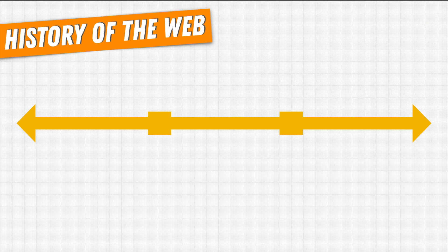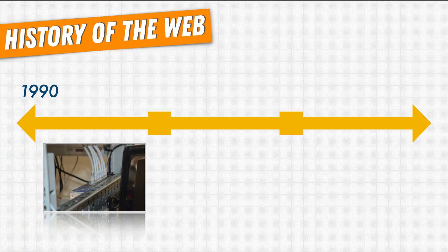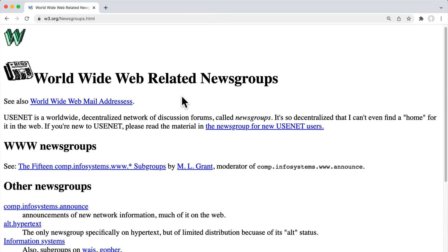The story starts in the early 1990s. This is when the internet started taking off and began being adopted in households by regular people, instead of mostly being used by governments and universities. The amount of users that could access the internet was about to start increasing very quickly.